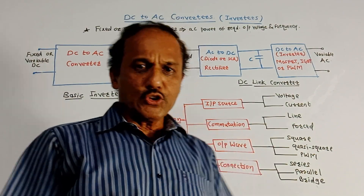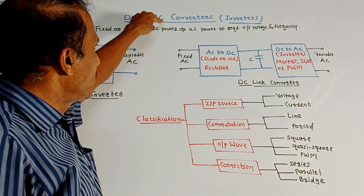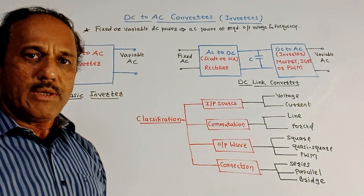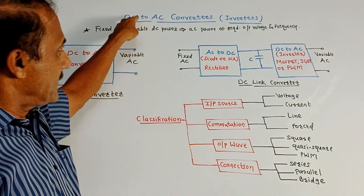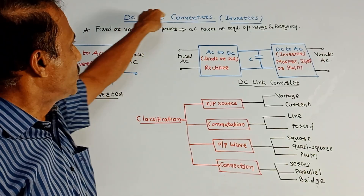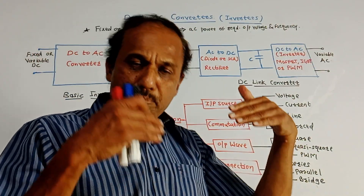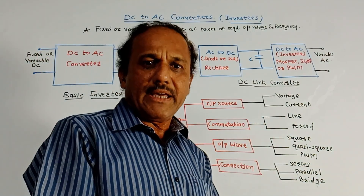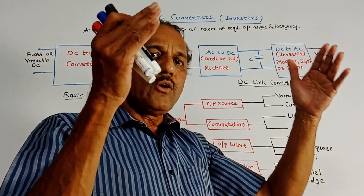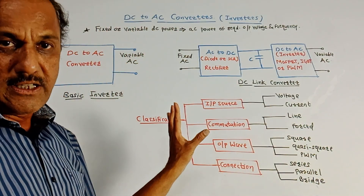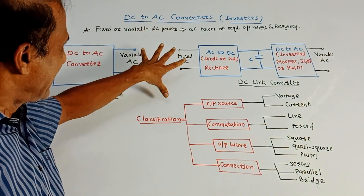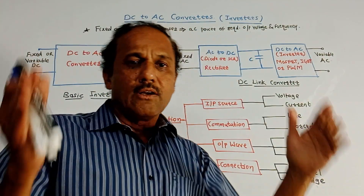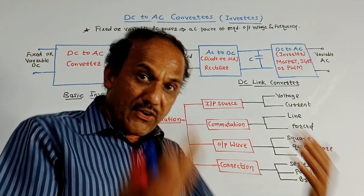Hello and welcome back to this channel. This topic is DC to AC converters, which is also called inverters. From the exam point of view, we may expect questions like: explain the basic concept of DC to AC converters, or explain the basic operation of an inverter. You may also expect questions related to what are harmonics and what is the effect of harmonics in case of an inverter. In this session we will be discussing the basic concepts related to DC to AC converters as well as the meaning of harmonics and their effects.